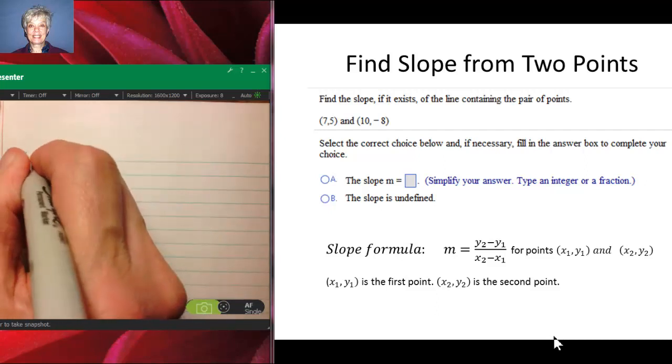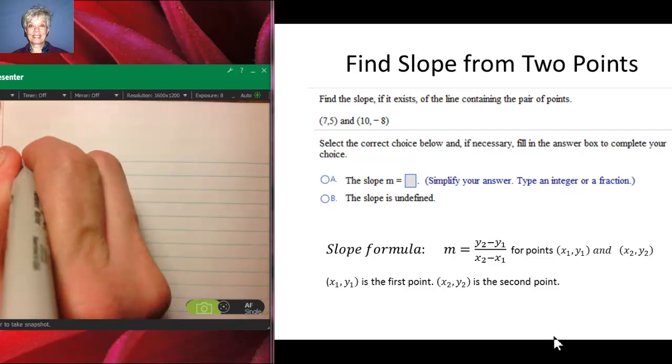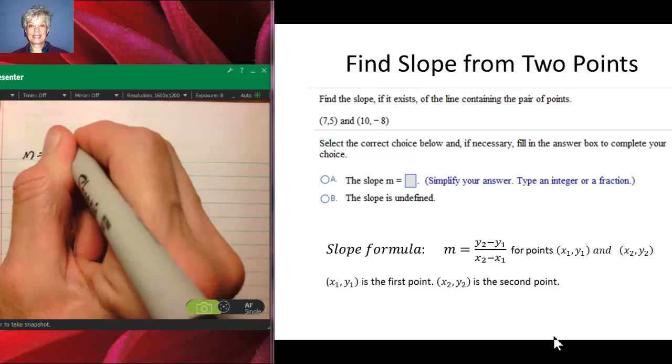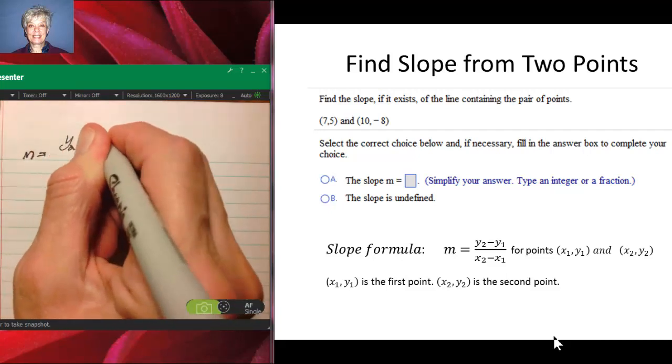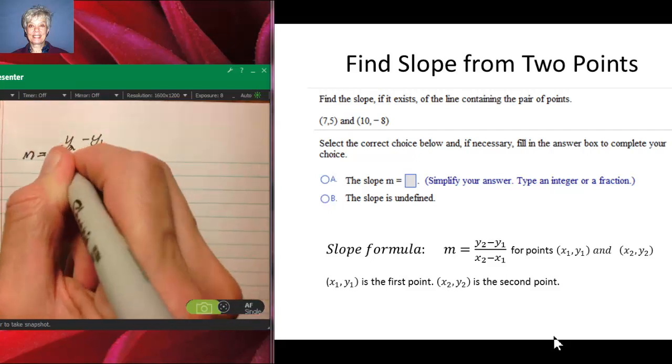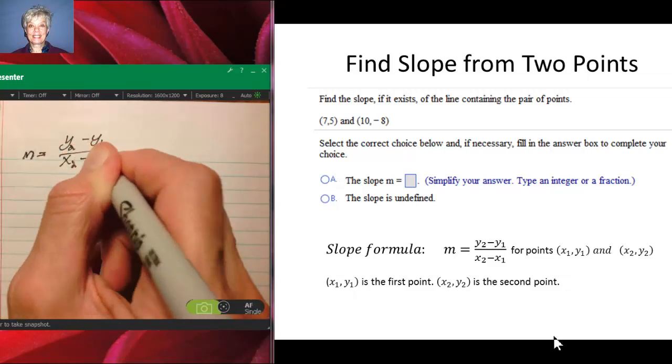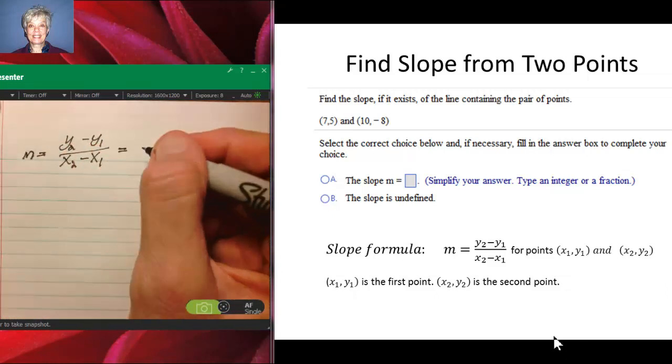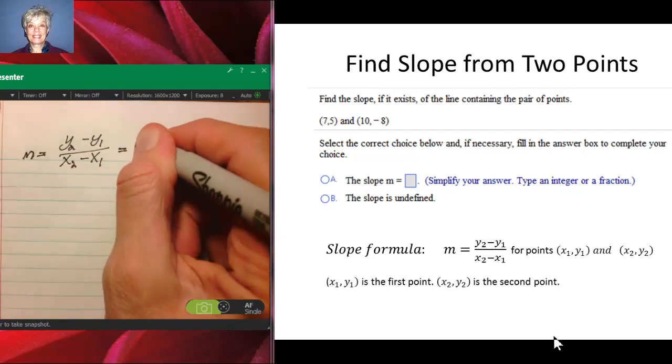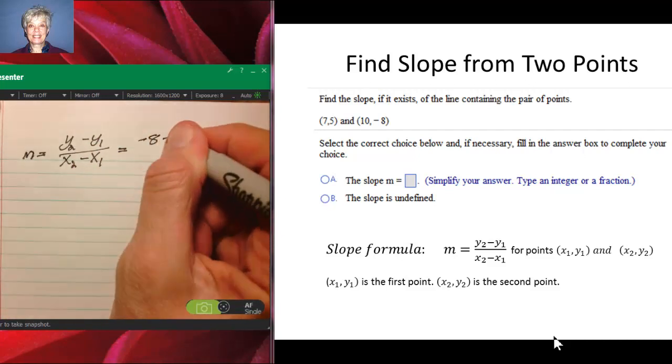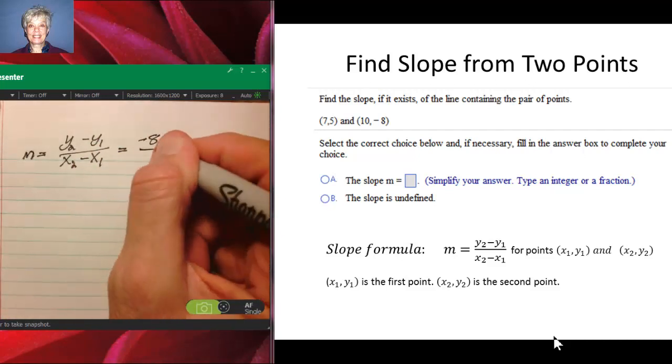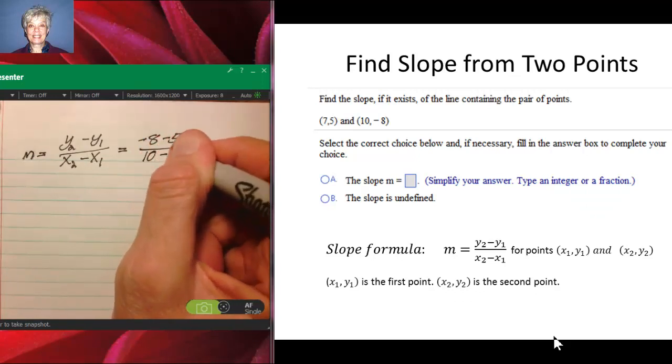Using the formula m equals y2 minus y1 over x2 minus x1, we'll have -8 minus 5 over 10 minus 7.